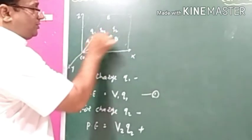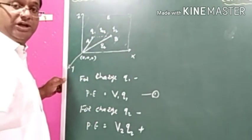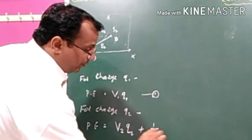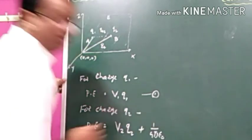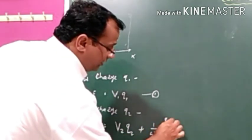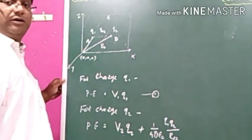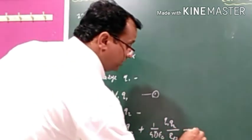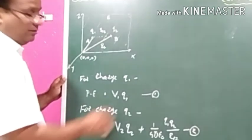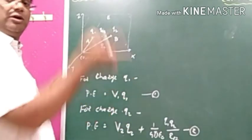Between these two charges, work is also done and potential energy is produced. The value of that potential energy is (1/4πε₀)·(q1·q2/r12). So the total potential energy for the second charge includes both terms. This is equation number two.